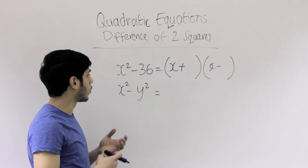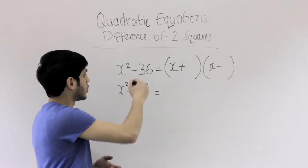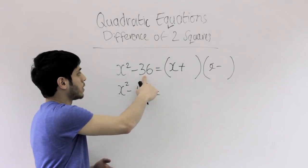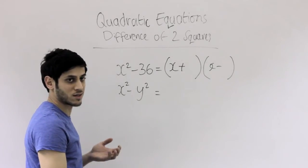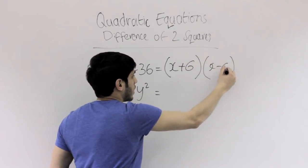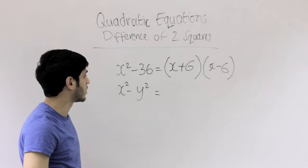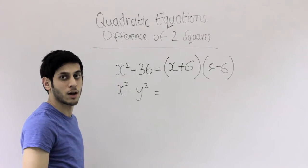And to answer these questions, all we're basically doing is just doing a square root of that number. So the square root of 36 is 6, so we just put 6 there. And that's it. We're done for this example. We can just leave it like that and that's done.